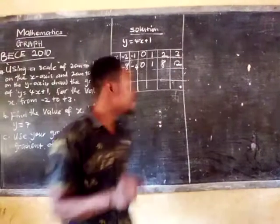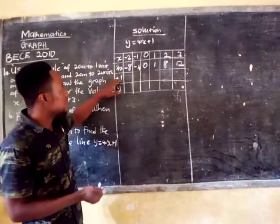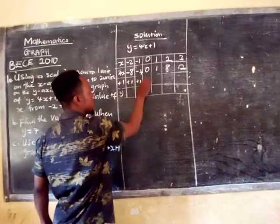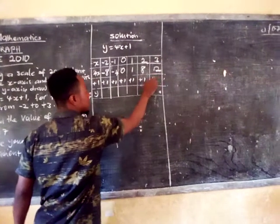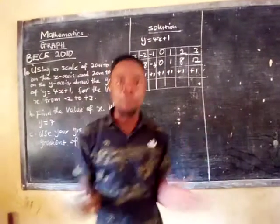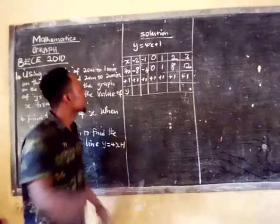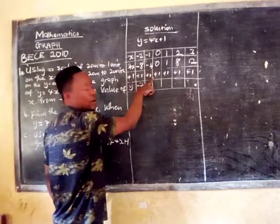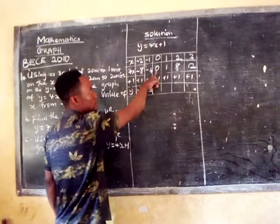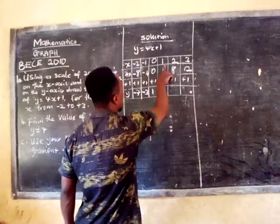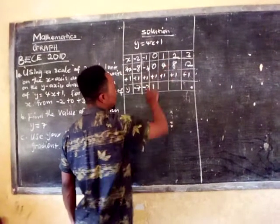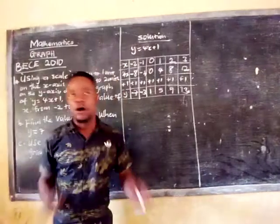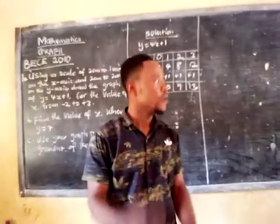After that first step, we handle the constant in the relation, which is plus 1. For a constant, the value stays the same throughout: plus 1, plus 1, plus 1, plus 1, plus 1, plus 1. Then we combine the numbers to get the y values: minus 8 plus 1 gives minus 7; minus 4 plus 1 gives minus 3; 0 plus 1 gives 1; 4 plus 1 gives 5; 8 plus 1 gives 9; 12 plus 1 gives 13.